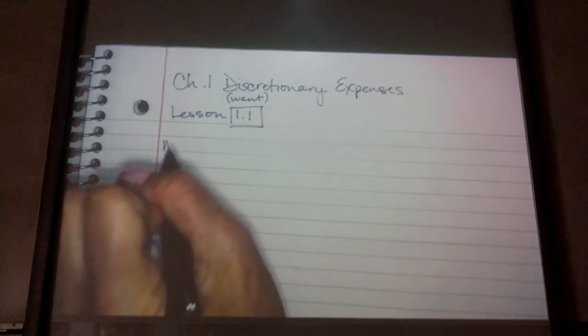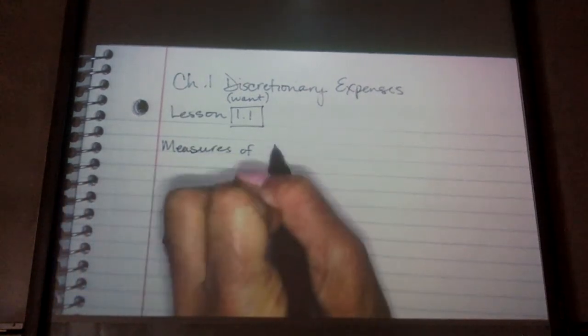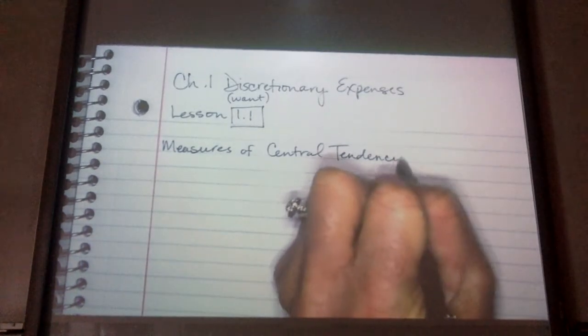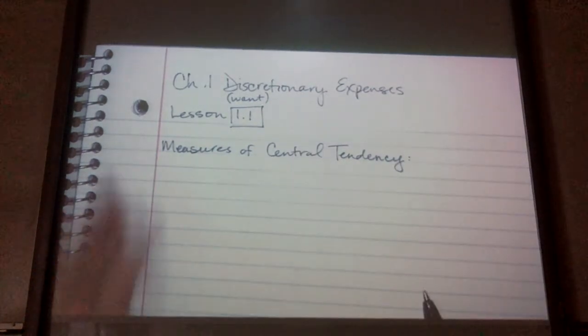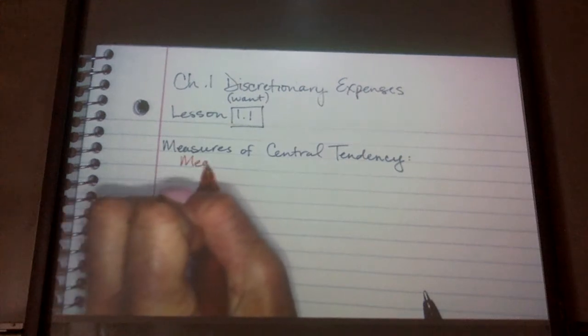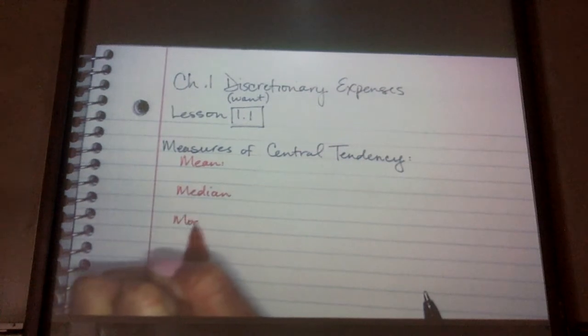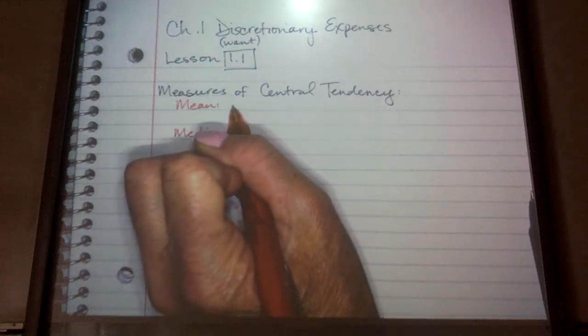So Lesson 1.1 goes over things called Measures of Central Tendency. And there are three types of Measures of Central Tendency. One is Mean, Median, and Mode. And you should be familiar with these. These should be a review, but I will quickly go over. So first of all, mean is another word for the average.